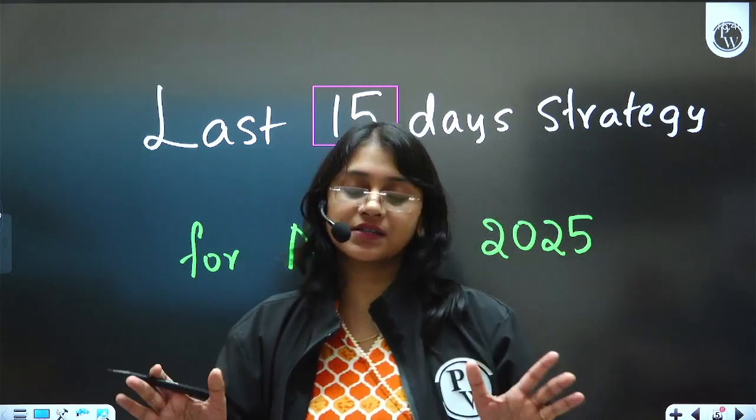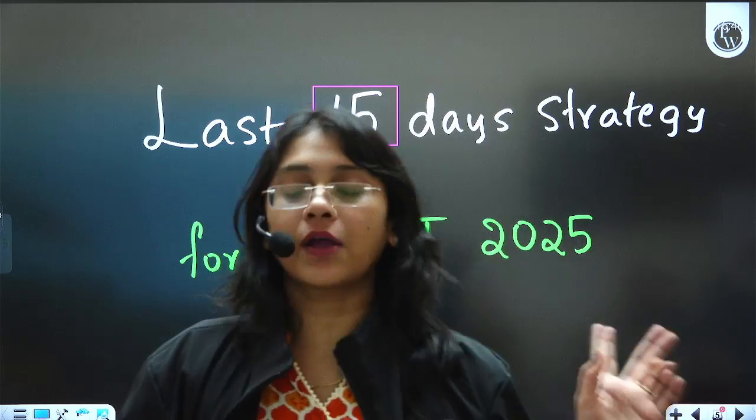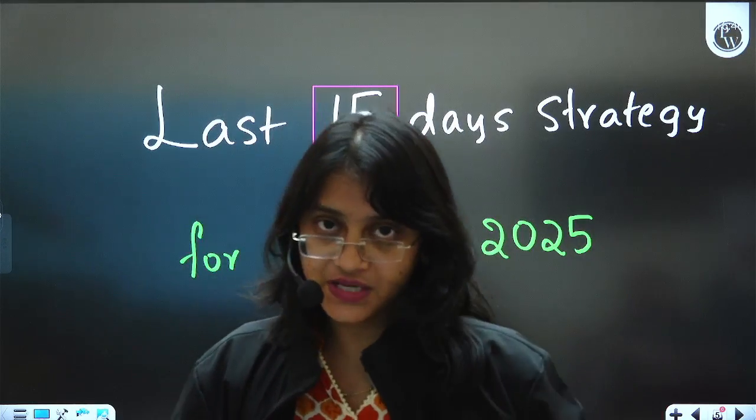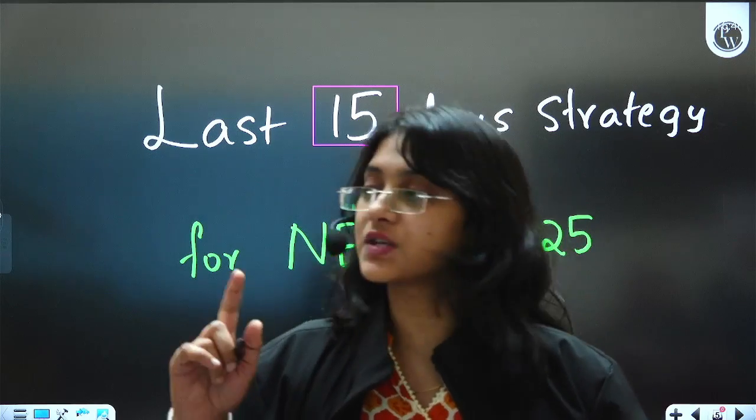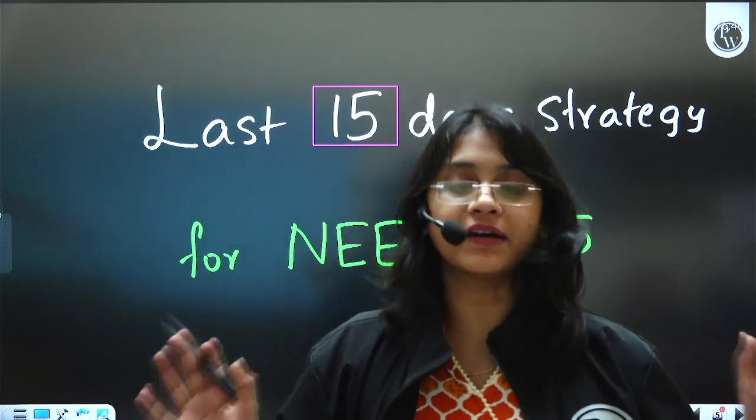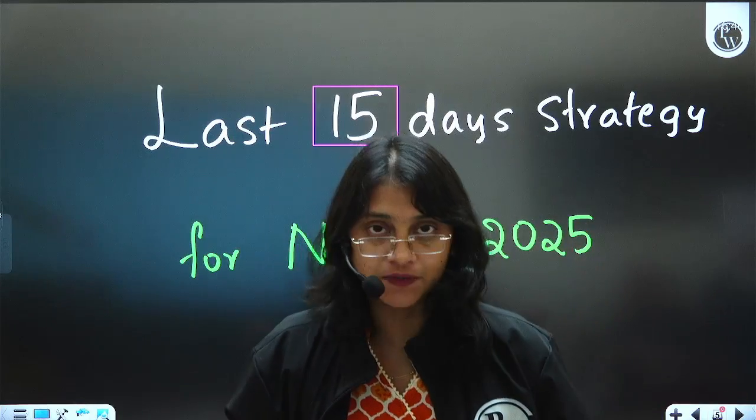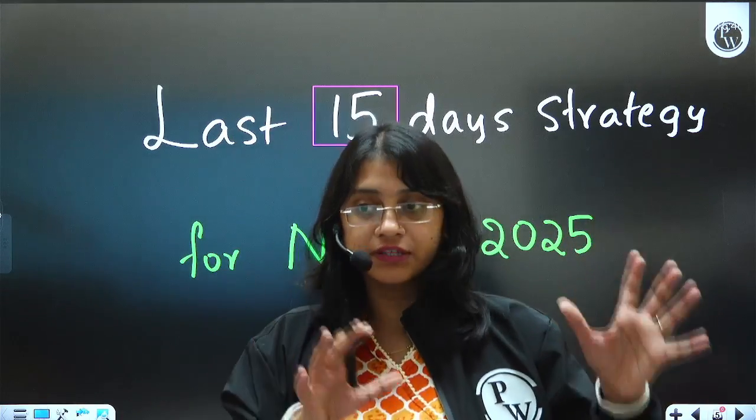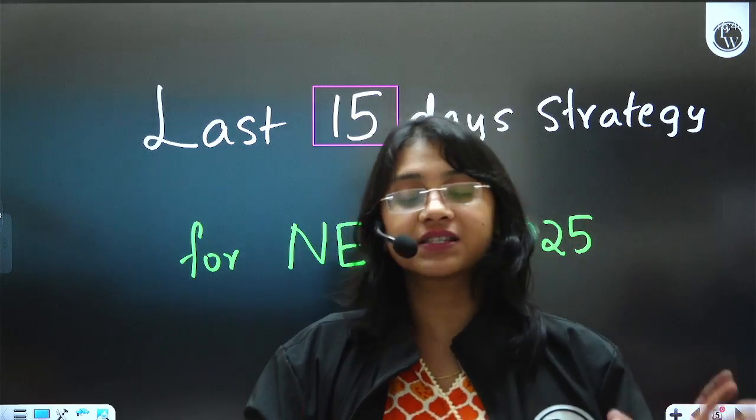So your aim is at least 650. Of course, your aim should be 720 out of 720, but at the least you should be scoring 650. For which you just need 350 in biology out of 360, 150 in physics, 150 in chemistry out of 180. And this is possible if you do certain things in this last 15 days.